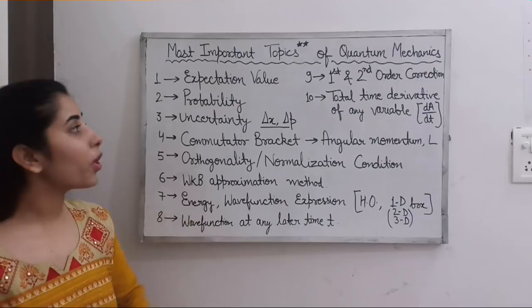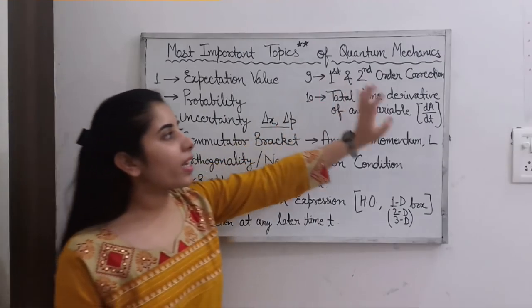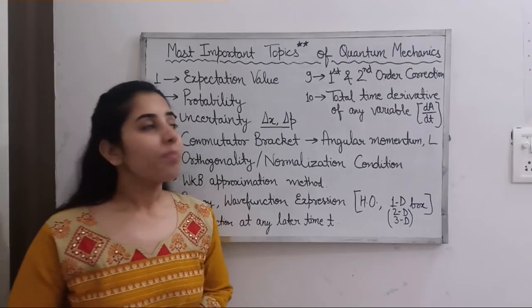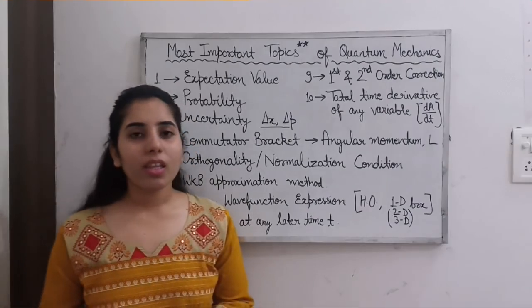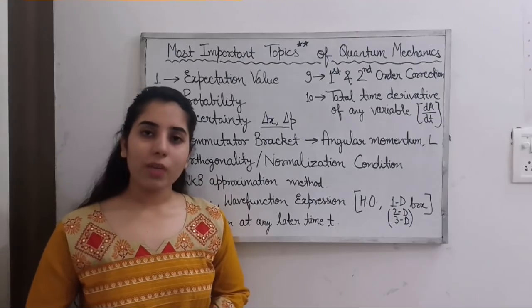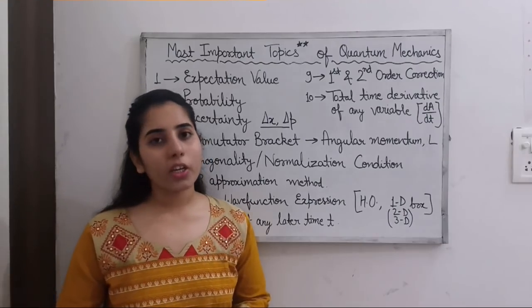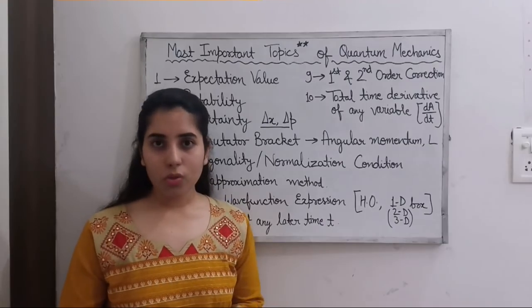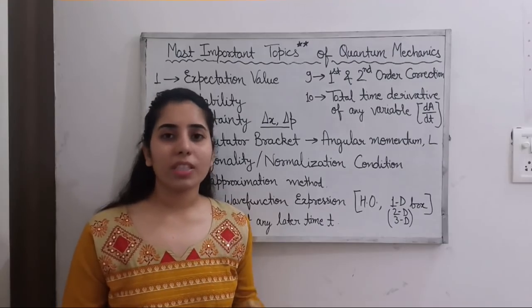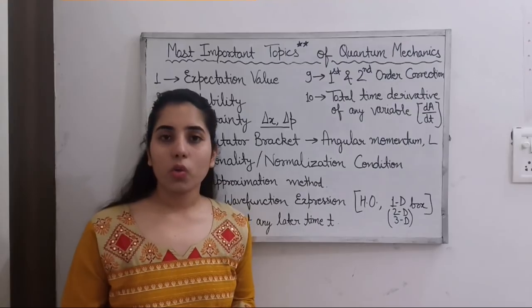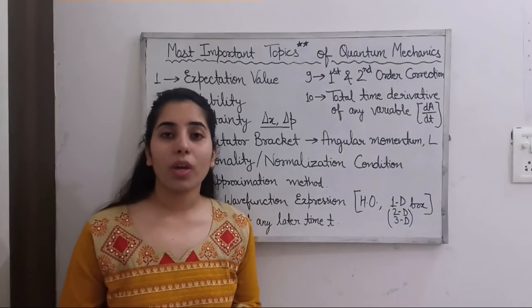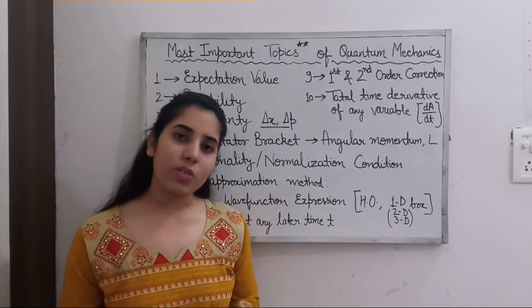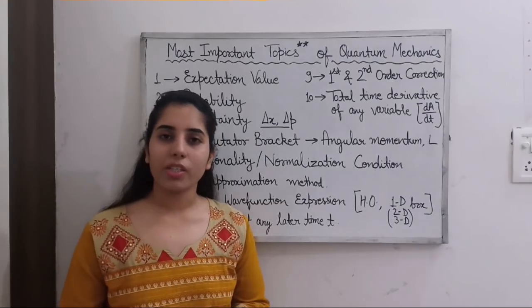The next important topic is the 1st and 2nd order correction to energy from perturbation theory. Questions asking for the 1st order or 2nd order correction to energy are very easy to solve because we have specific formulae for those, with which we can very easily get the answer for both the 1st order correction to energy and the 2nd order correction to energy.